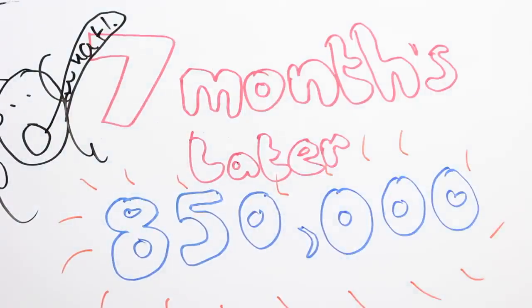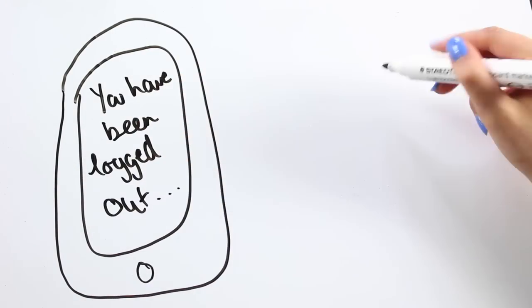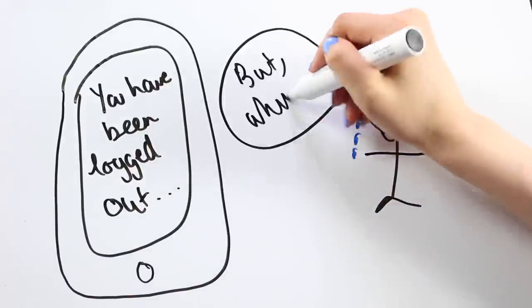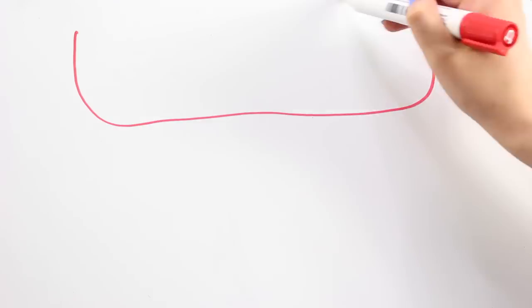Three days after I hit 850,000 followers I got a notification from Instagram saying I'd been logged out of my account. Instantly I thought I'd been hacked but when I emailed Instagram they told me they deleted my account, and when I asked why they never told me a specific reason which I found so upsetting.